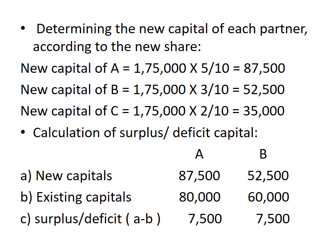We do not need to calculate step three — ascertaining the present capital of all partners — since it is already given in the question as Rs. 80,000 and Rs. 60,000 respectively. So let's go to the next step: calculation of surplus and deficit of capital. The existing capital of A is Rs. 80,000 and the new capital is Rs. 87,500. The new capital is more than the existing capital by Rs. 7,500, which is a deficit, so A will bring in Rs. 7,500 more. For B, the new capital is Rs. 52,500 whereas the existing capital is Rs. 60,000 — existing is more than new by Rs. 7,500, which is a surplus, so B will withdraw Rs. 7,500 from the firm.